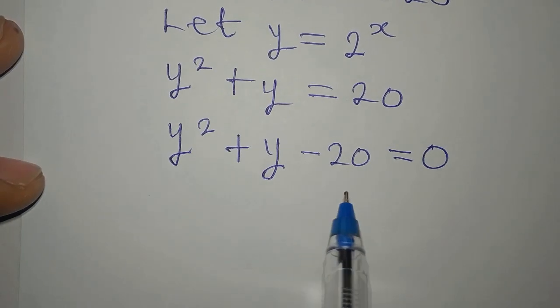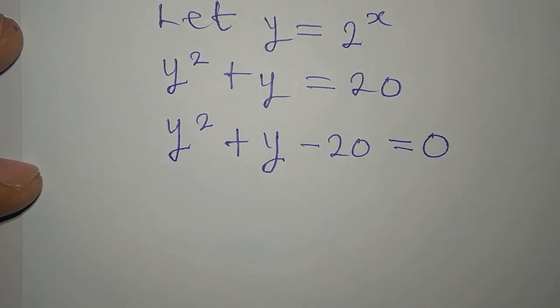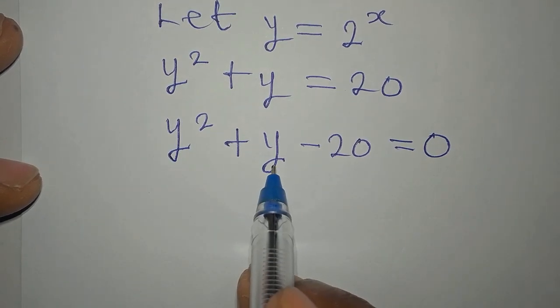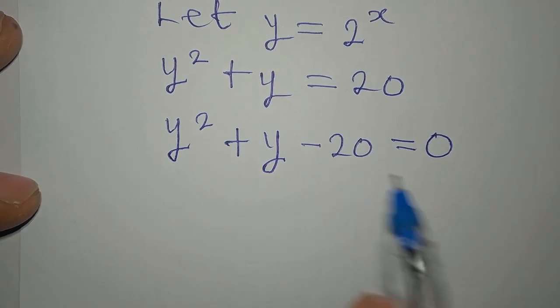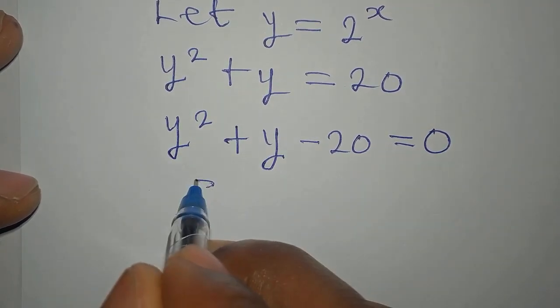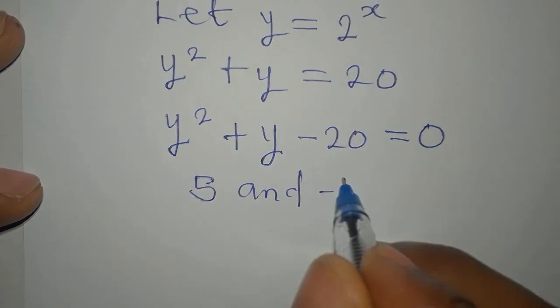Now, let's think whether it is factorizable or not. What two numbers do we multiply to get minus 20 and add them to get 1? The numbers will be 5 and minus 4. So we're going to use 5 and minus 4.